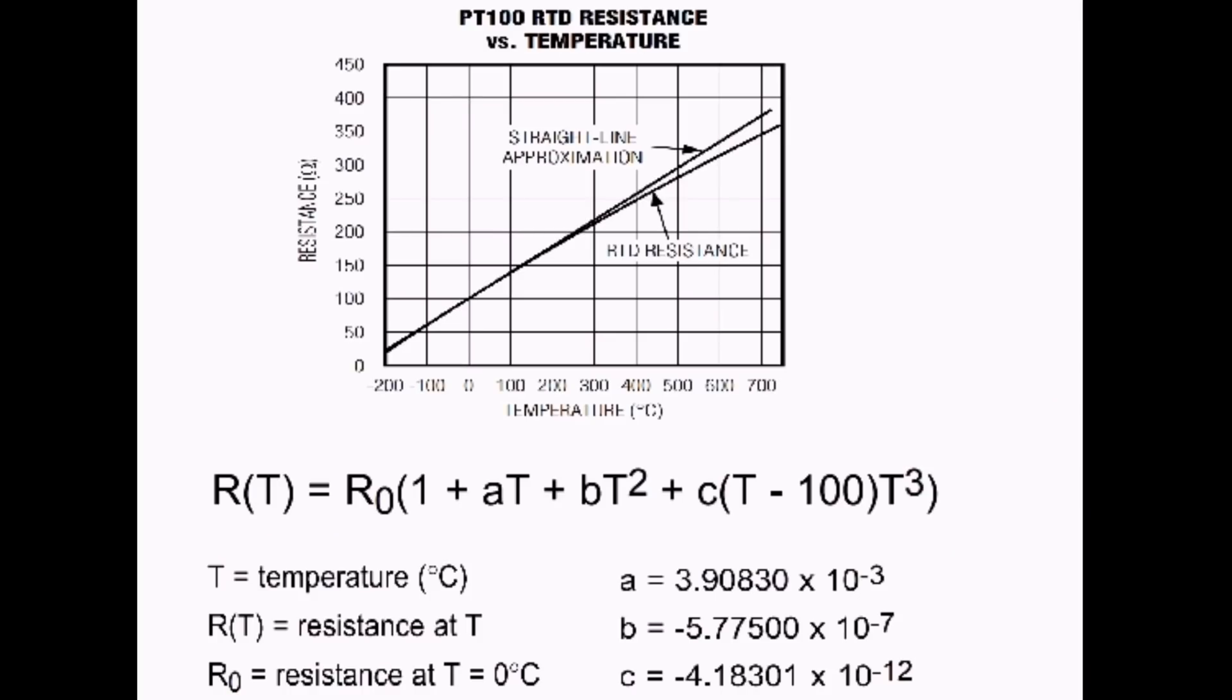One last topic I'd like to cover before doing our demo is the Kalender van Dusen equation. This equation describes the correlation between temperature and resistance of the RTD. We can see here the curve for a PT100 is relatively linear, but does have some curvature.